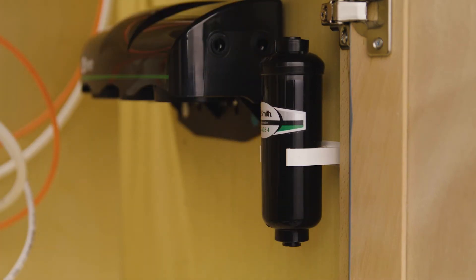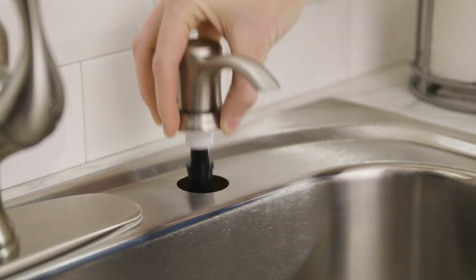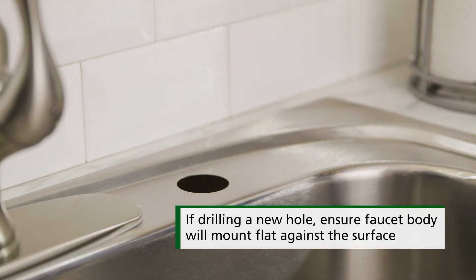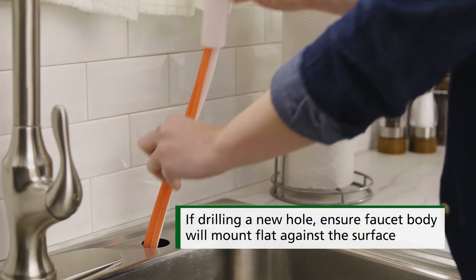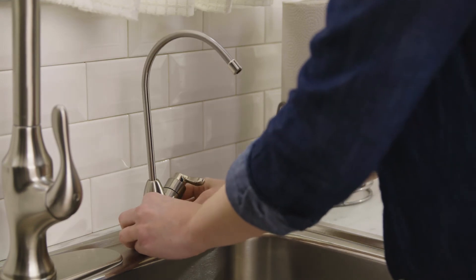Now you need to install the dedicated faucet. Make sure there's a sink top hole that's one and one-fourth inch in diameter for the faucet. If not, you will need to drill one. Then place the metal escutcheon and black gasket onto the faucet base. Feed the tubing and faucet threads through the countertop hole.